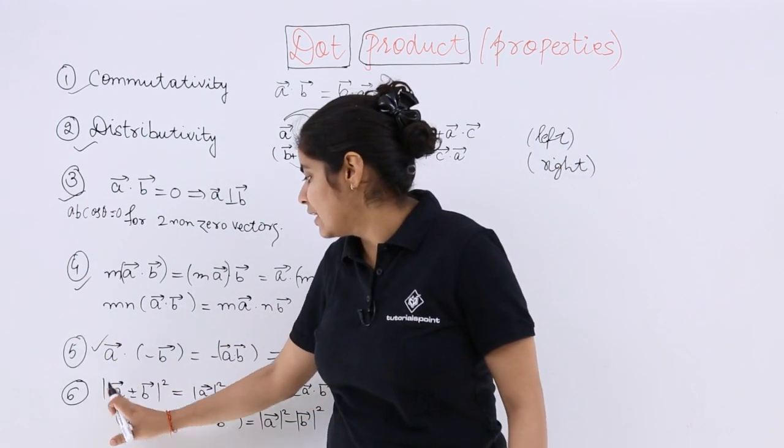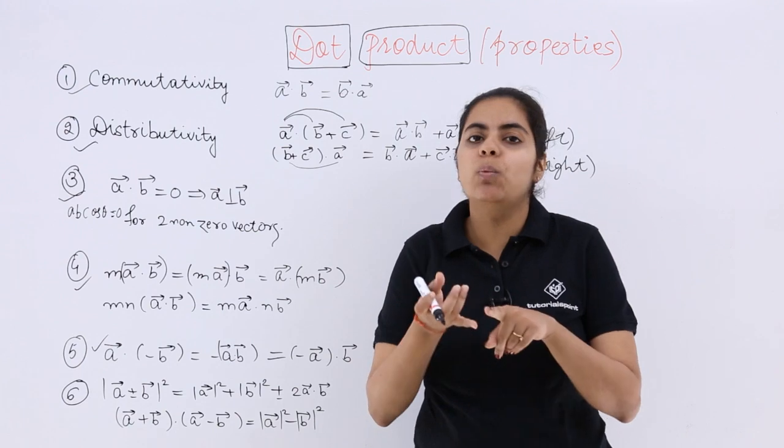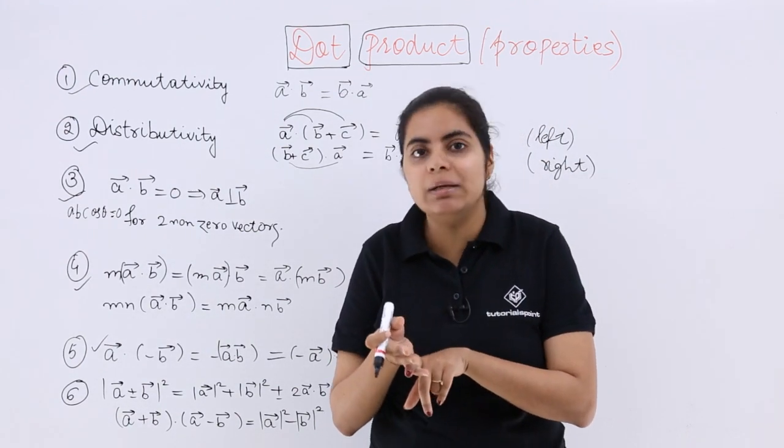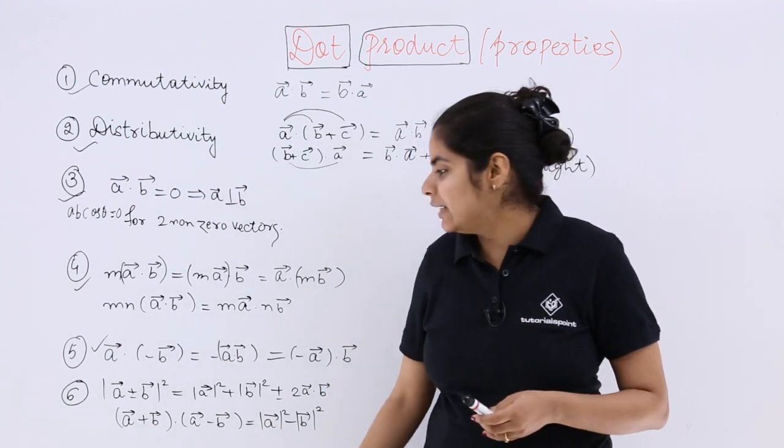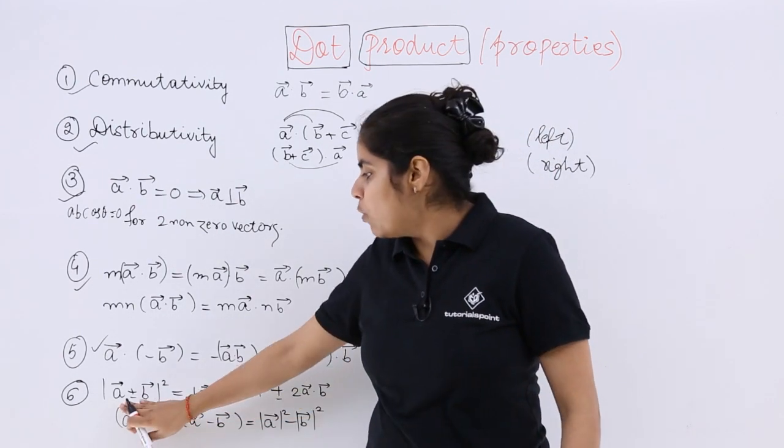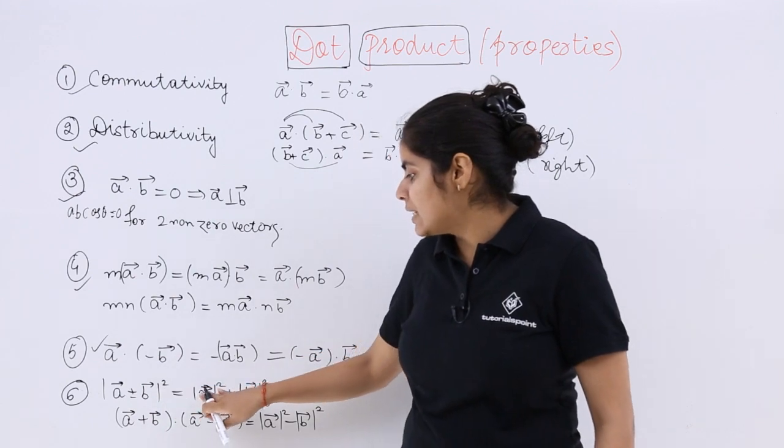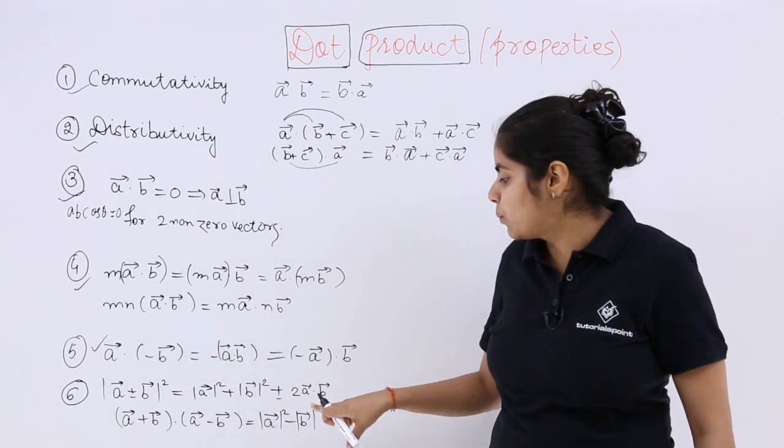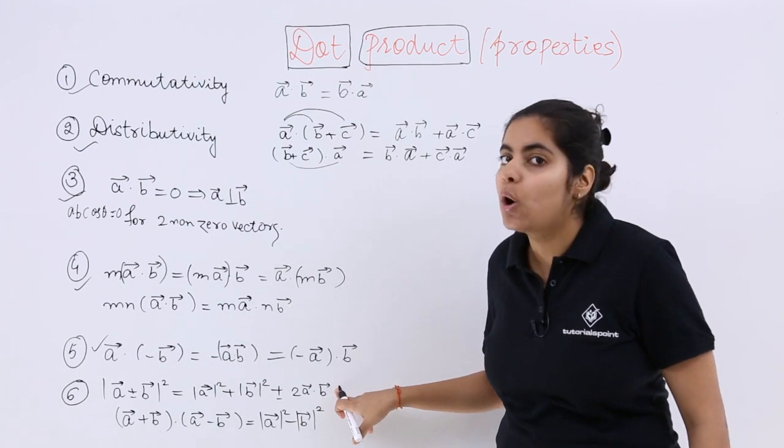The next case is regarding identities. You know what is (A plus B) whole square? You know what is (A minus B) whole square? You know what is (A plus B) multiplied by (A minus B)? These three identities are written here. Mod of (A plus B) whole square is A square plus B square plus 2AB, where AB should be in a dot product, meaning cos theta will come upon opening.